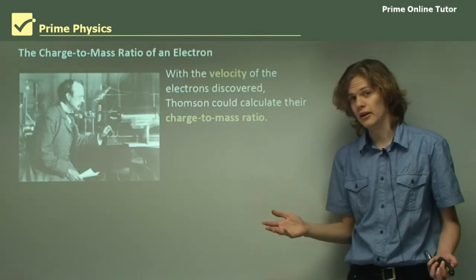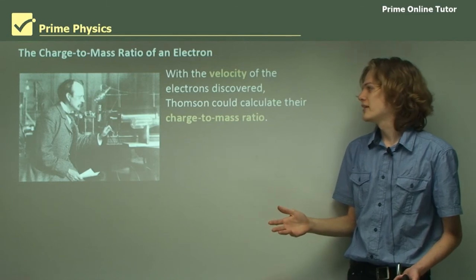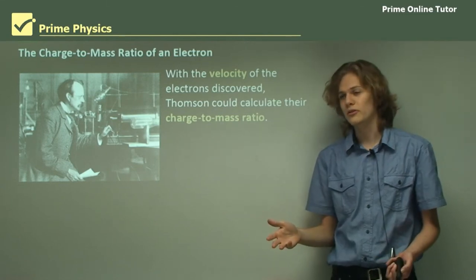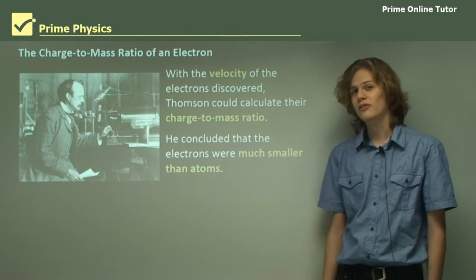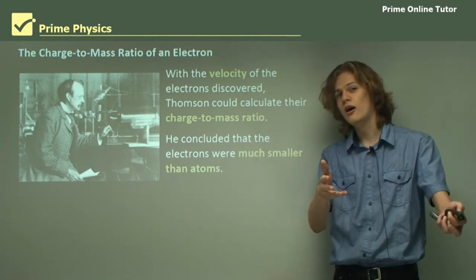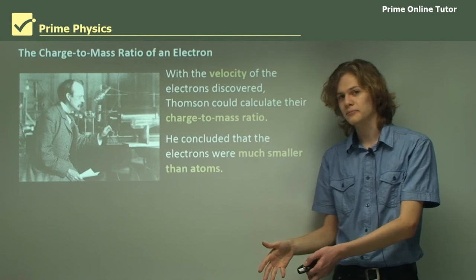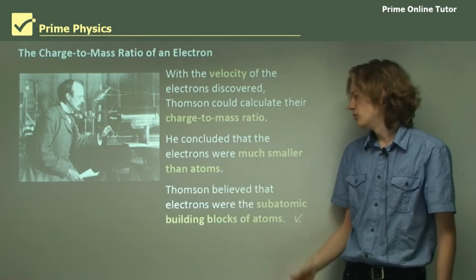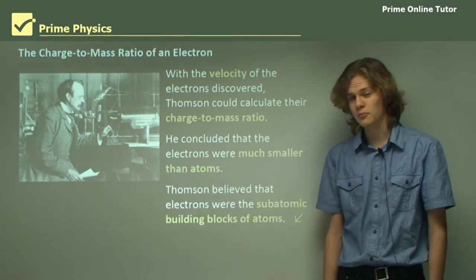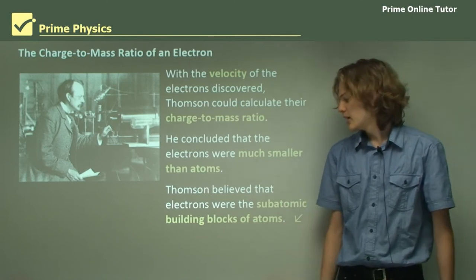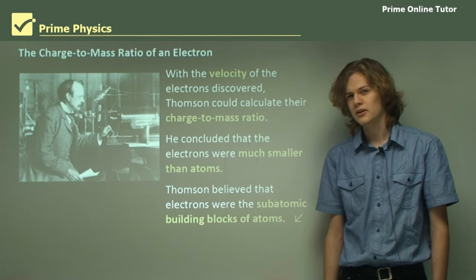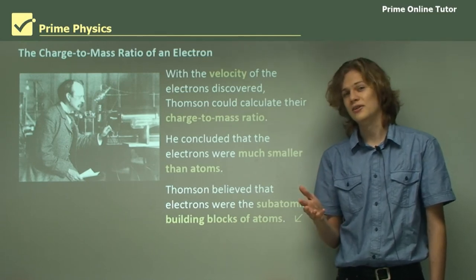Having determined the velocity of the electrons, Thompson could then calculate the charge to mass ratio of the electron. He concluded that the electrons were much smaller than atoms, because the charge was so high for such a small mass. From this, he concluded that the electrons were a subatomic particle, the first ever subatomic particle to be discovered. He believed that they were the building blocks of atoms, but we'll learn more about that a little later on.